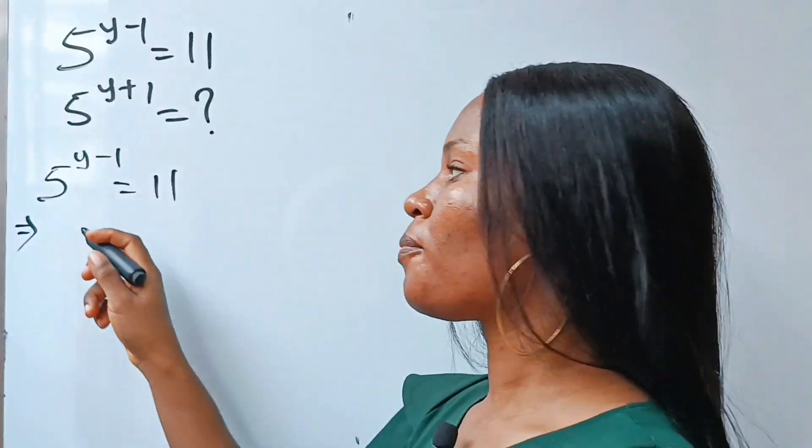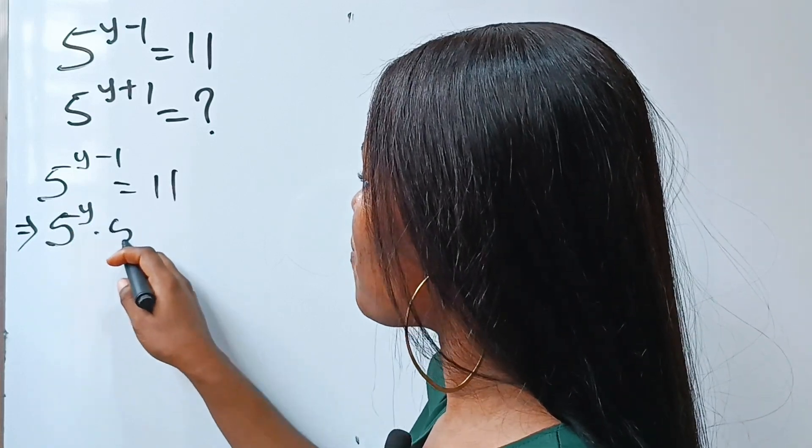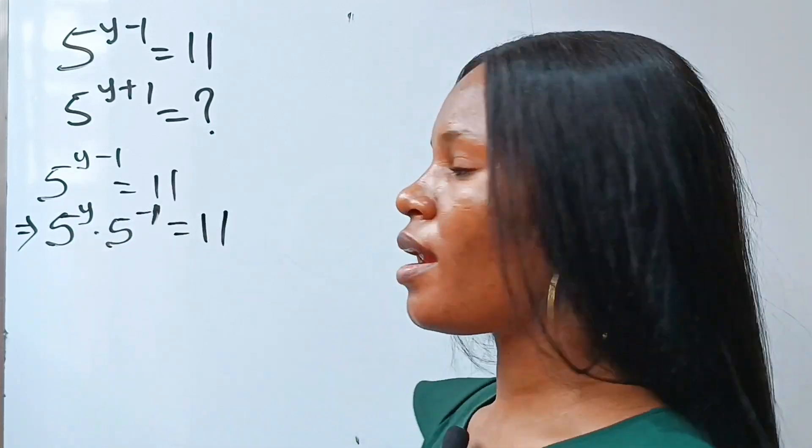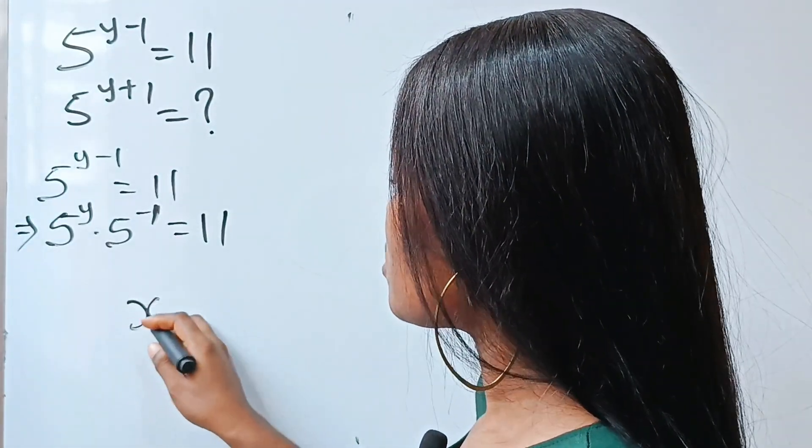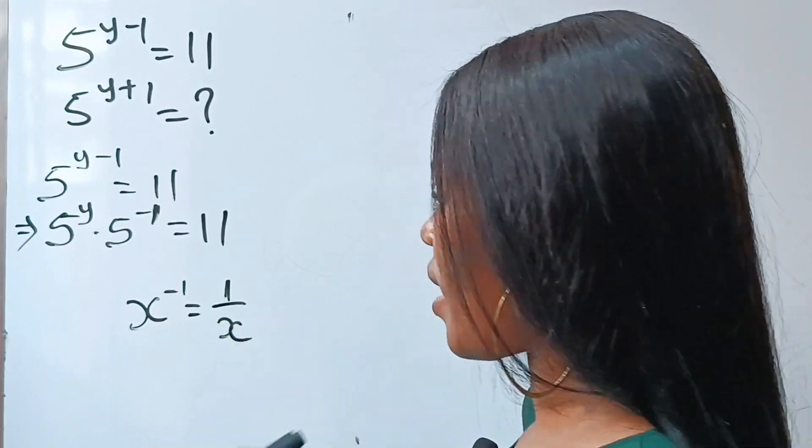So this implies that 5 raised to the power of y multiplied by 5 raised to the power of minus 1 is equal to 11. Now, x to the power of minus 1 is equal to 1 over x.